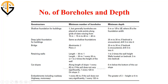For retaining walls, the number of boreholes depends upon the length of the wall. If the length is less than 30 m, the minimum number of boreholes should be one. If it is greater than 30 m, one borehole is required for every 30 m of length.